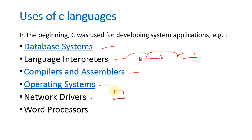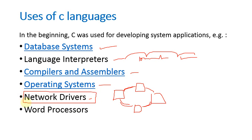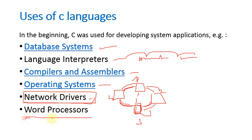Network drivers are used to communicate between multiple computers. If there are four computers in a network and you want to interconnect them, you need a network driver. A network driver is not a cable — it is a software which enforces communication between different terminals. From any point, you can access the information of any other terminal. Word processors like Microsoft Word were also initially developed using C language.